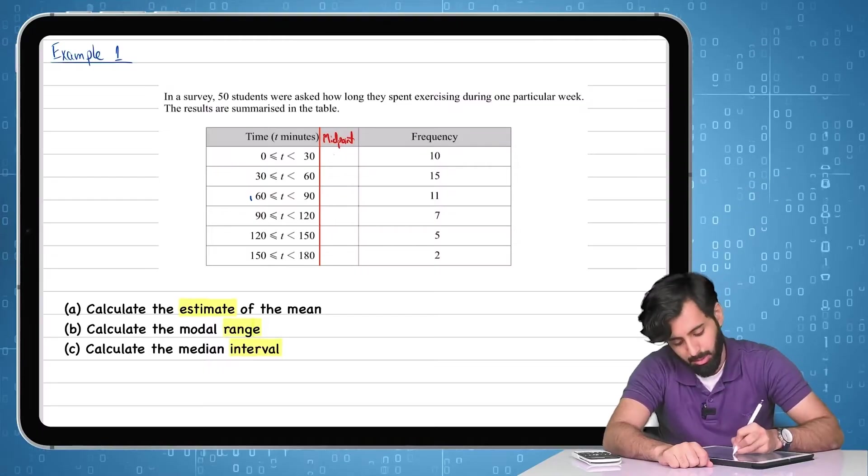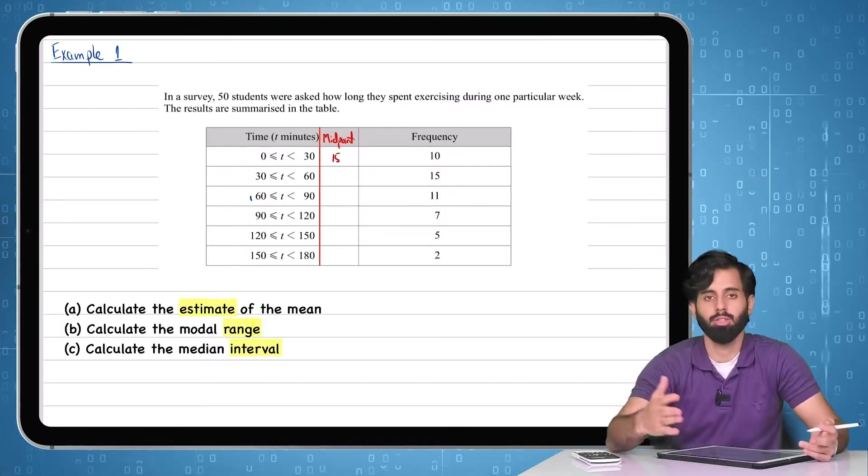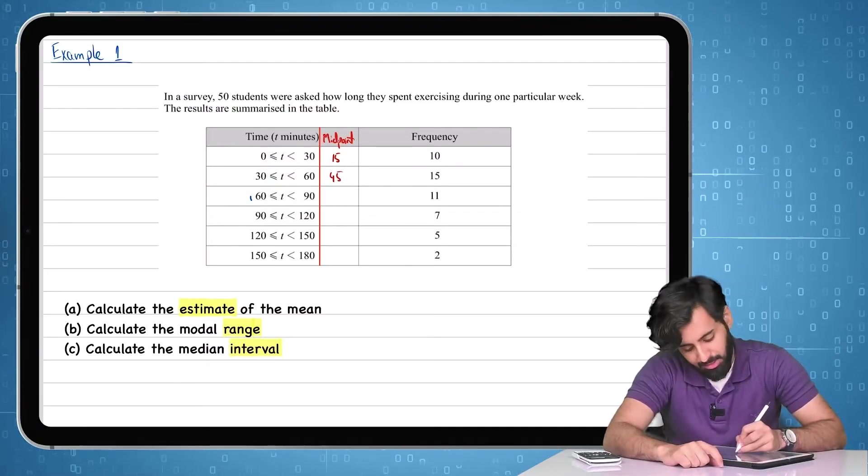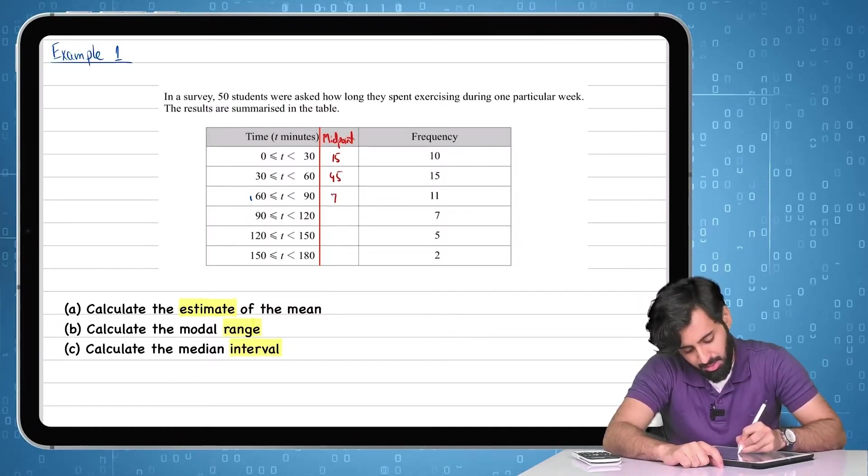So that means if you have 0 to 30, the midpoint of it is going to be 15. How? 0 plus 30 divided by 2. And then 30 to 60, the midpoint of it is going to be 45. 60 to 90, the midpoint is going to be 75.